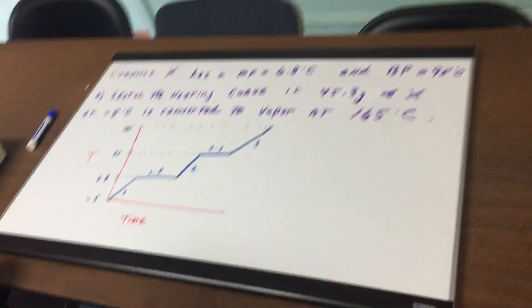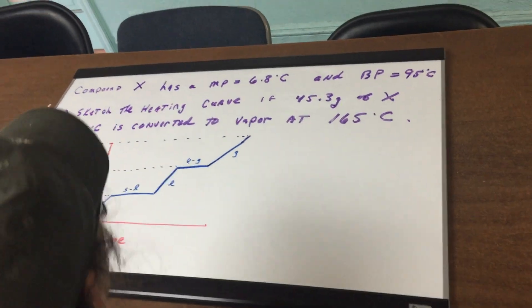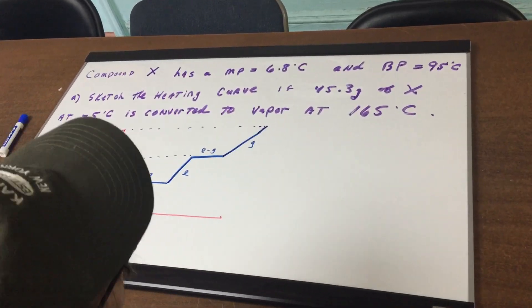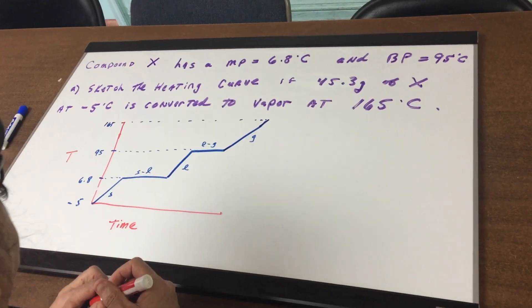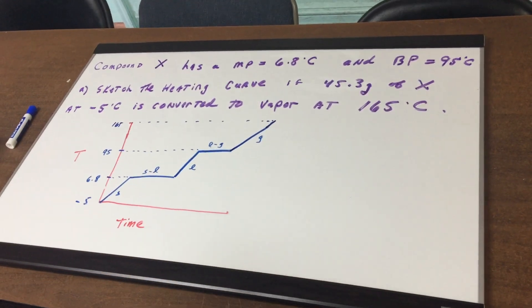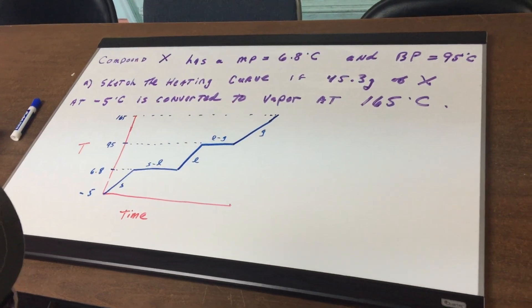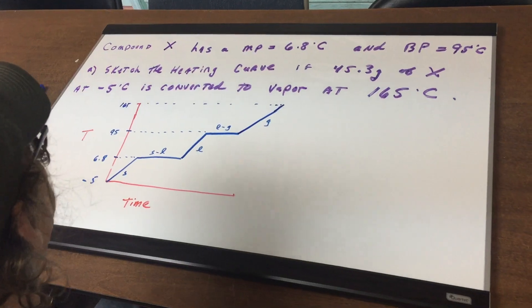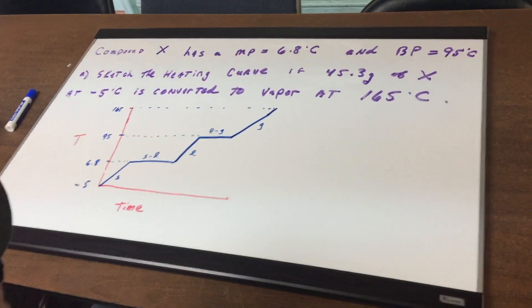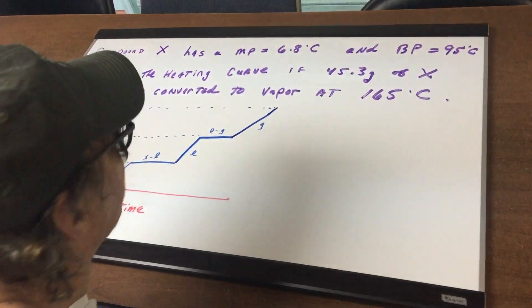We're going to do this problem in two parts. It says that compound X has a melting point of 6.8 degrees and a boiling point of 95 Celsius. And what I want you to first do is to sketch the heating curve. If 45.3 grams of X which is at negative 5 degrees Celsius is converted to vapor at 165 Celsius.